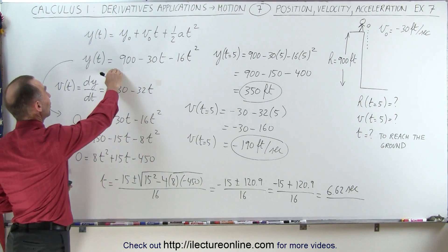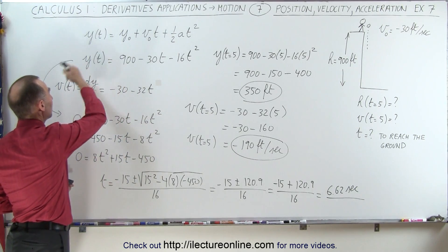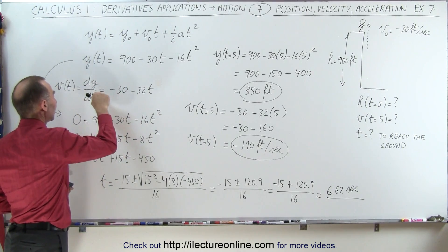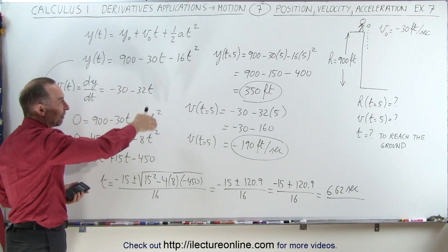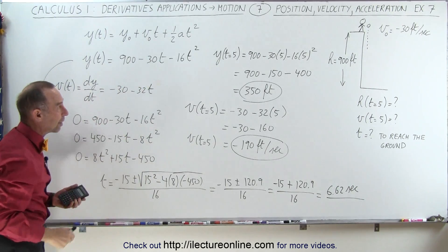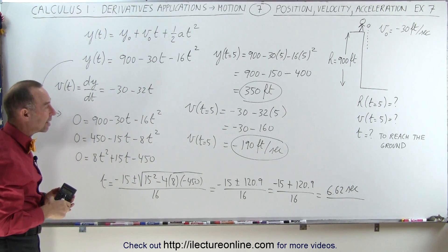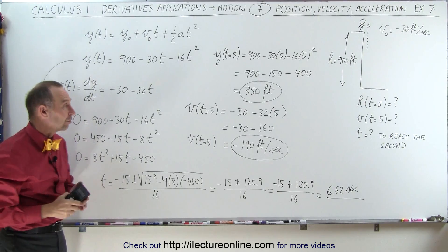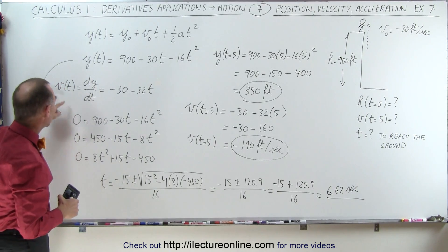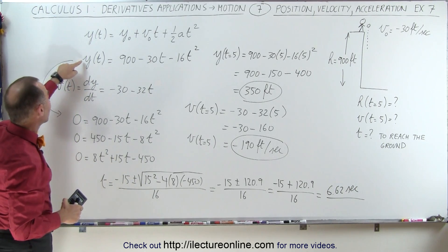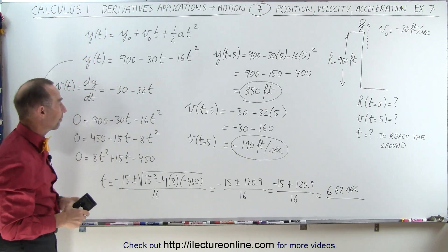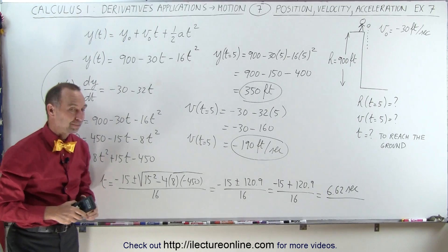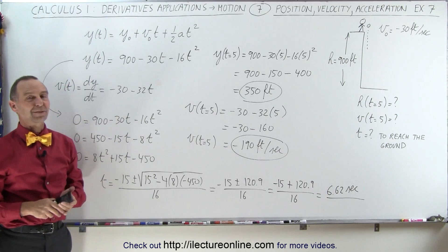To summarize: we start with the position equation, take the derivative to find the velocity equation, evaluate it at the proper time, and then to find when the object reaches the ground we set the position equal to zero and solve for time. And that's how it's done.